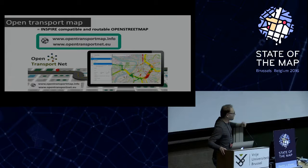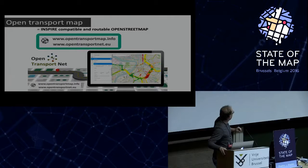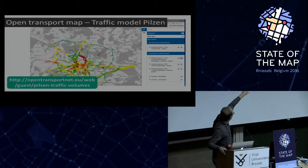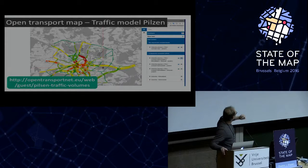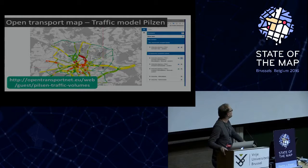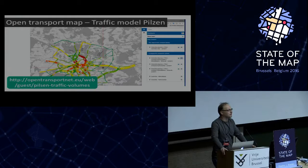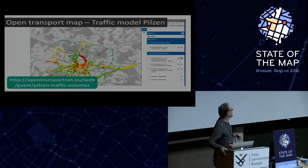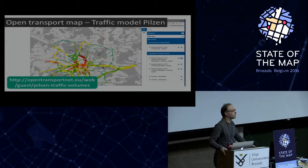We have made different traffic predictions for Pilsen. The one below shows the normal situation with normal traffic flow, and the one in the left upper corner shows the situation when one bridge is closed. They will close a bridge in the center and you can see immediately how the traffic is expected to flow through the city. It's an approach of using OpenStreetMap and open data to show how traffic will flow and what the consequences will be if public roadworks take place.